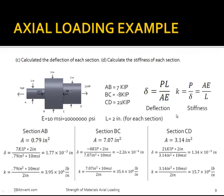To calculate deflection, use force times length divided by area times Young's modulus. Young's modulus is 10 MSI (10,000,000 PSI) and the length is 2 inches for each section. For section AB: 7 KIP × 2 in / (0.79 in² × 10 MSI) = 1.77 × 10⁻³ inches. For section BC: using negative 8 KIP and area 7.07 in², the answer is negative 2.26 × 10⁻⁴ inches. For section CD, the answer is 1.34 × 10⁻³ inches.